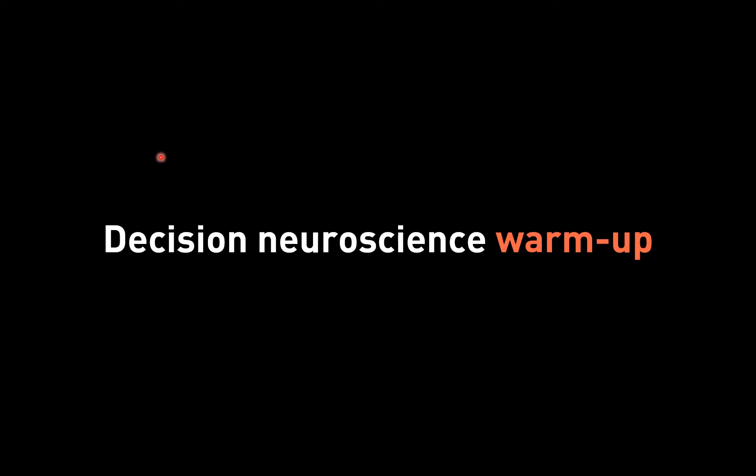What did we discuss last time? The topic from last time is one of the four main topics in these four weeks. The topic is about risky decision-making and intertemporal choice. The central question is: what is the risk, and why can intertemporal choice and risky decision-making be related? Why do we group these two together?